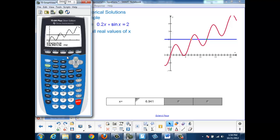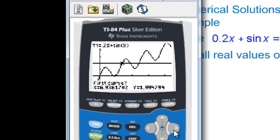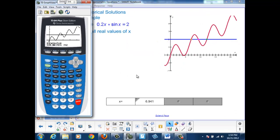Now let's find the second answer. Go back to second trace, option 5. And now I'm going to move closer to the second intersection, but stay to the left on the curve. Now move to the right of the intersection. And hit enter. And my second solution is 9.280.